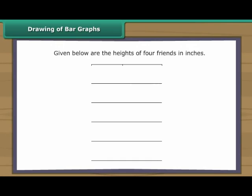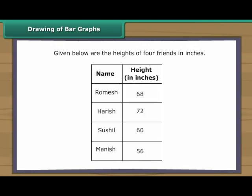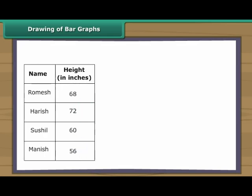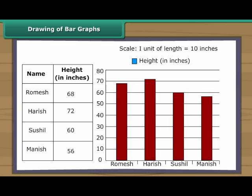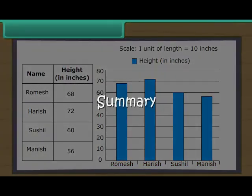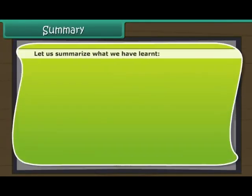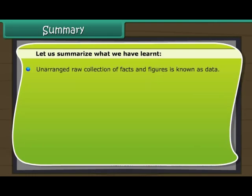Drawing of bar graphs. Let us now draw a bar graph with the help of the given data. As the heights are concentrated near 60, let us measure 10 inches per unit of length. Now let us draw vertical bars. The height of the bars is decided by the heights of the boys in inches — the taller the boys, the taller the bars.